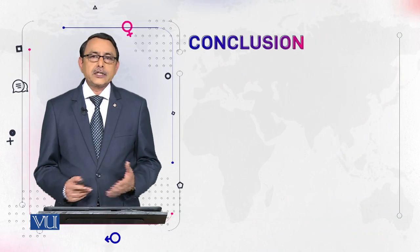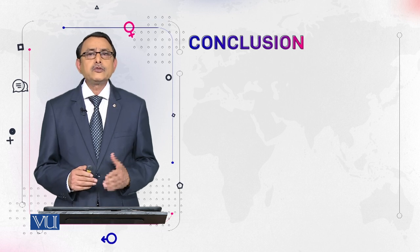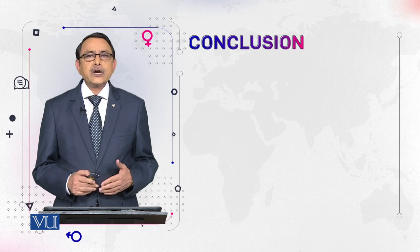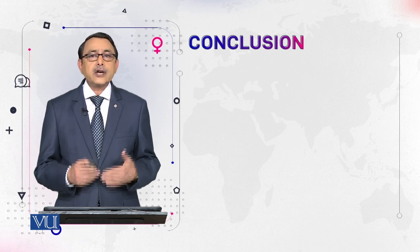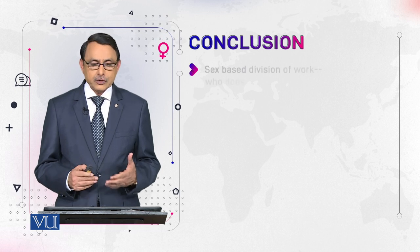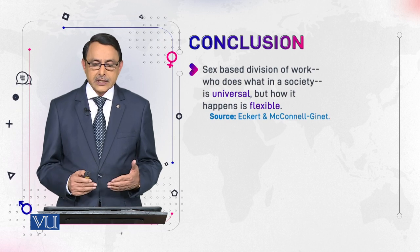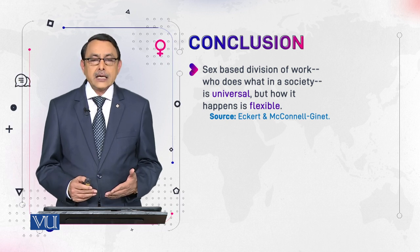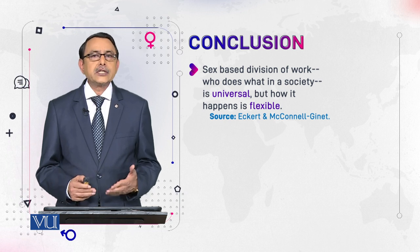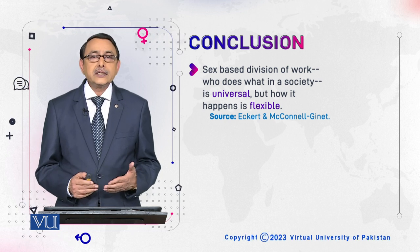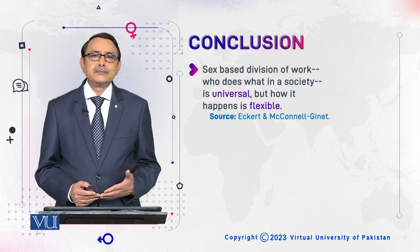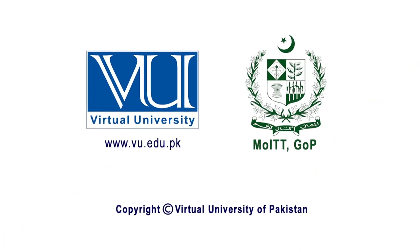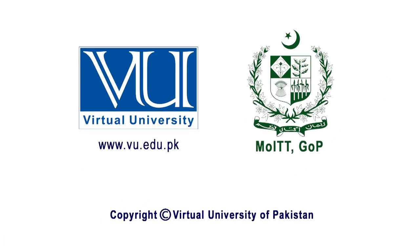To conclude this talk about division of labor — which is the result of functionalism, and functionalism is the result of sex oppositions — we come to know that sex-based division of work, meaning who does what in society, is something universal: it happens in all societies. But how it happens varies from society to society.